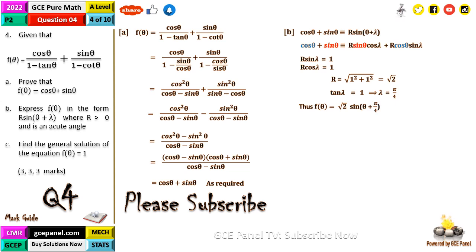And the last part: find the general solution of the equation f(θ) equals 1. You just need to continue with the last part, that's our f(θ) which is √2·sin(θ + π/4). We just equate that to 1. That will give us sin(θ + π/4) equals 1/√2, and 1/√2 is the same as sin(π/4). So sin(θ + π/4) equals sin(π/4).